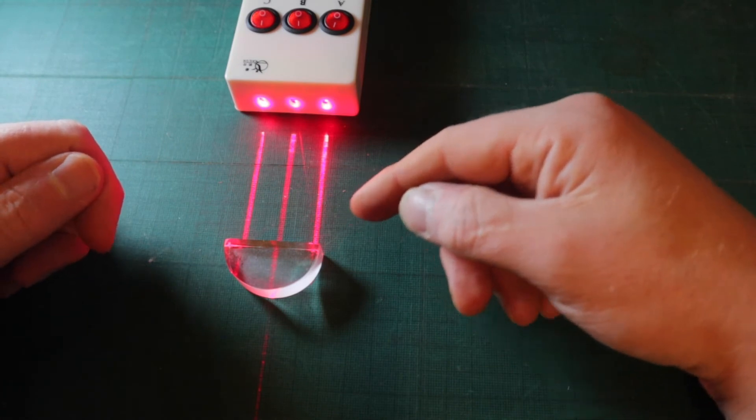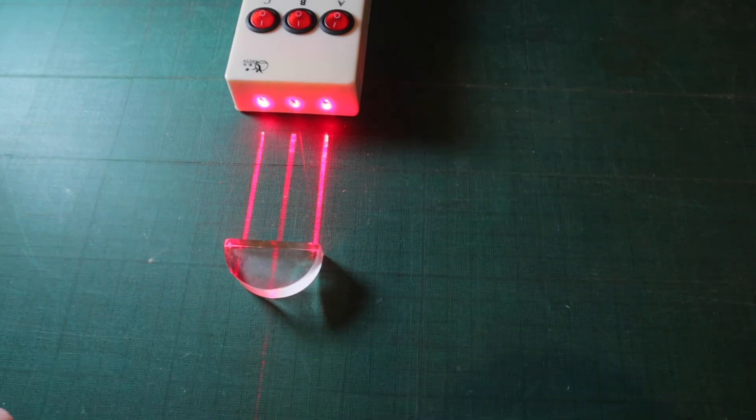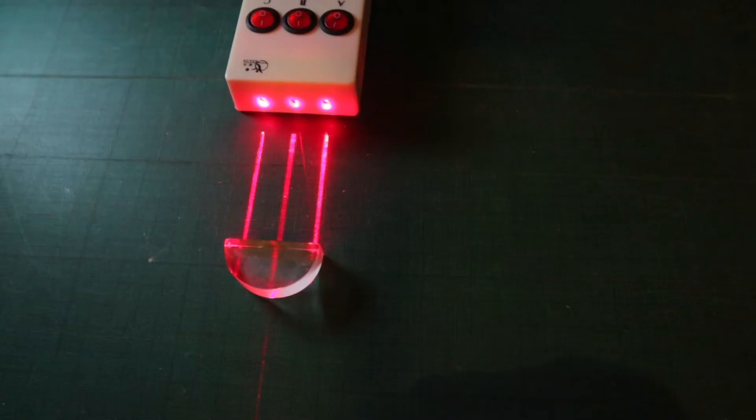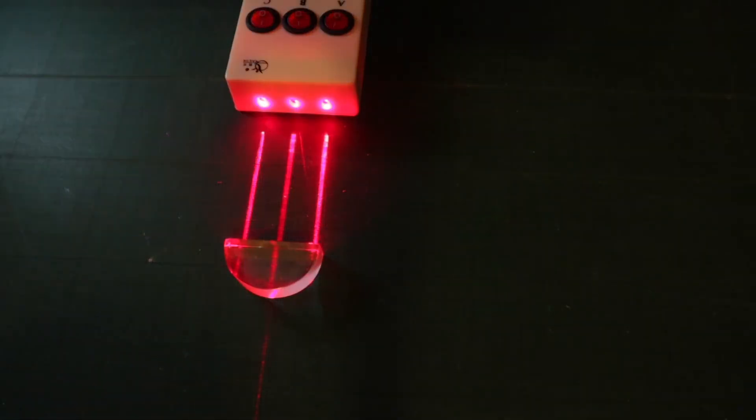As you can see, once we've put all three laser lights on, we're losing a lot of the beam path below the lens. Just turn the lights right down so you can see what that looks like.